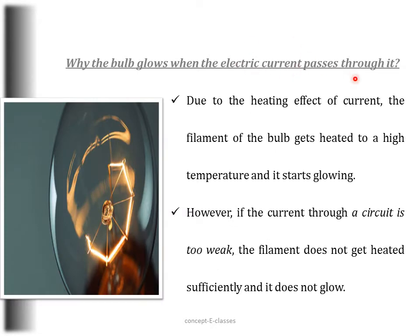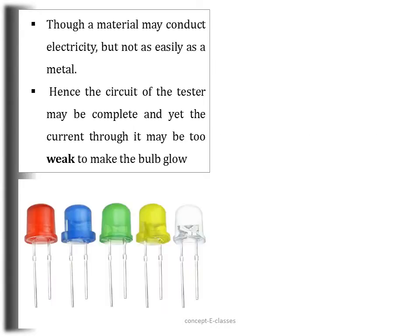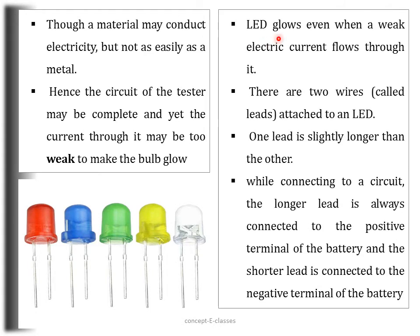How does a bulb glow when an electric current passes through it? It is due to the heating effect of the current — the filament of the bulb gets heated to a high temperature and starts glowing. In some situations, even though the liquid is conducting, the bulb may not glow because the current through the circuit is too weak and the filament does not get heated sufficiently. In such cases, we use an LED.